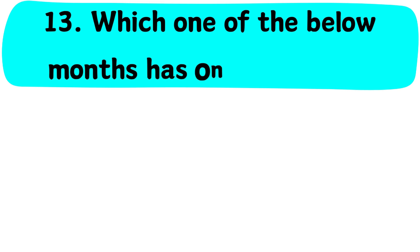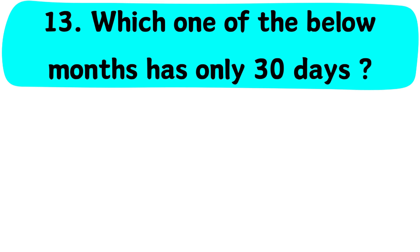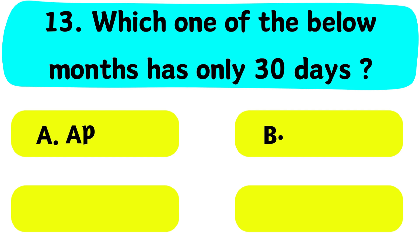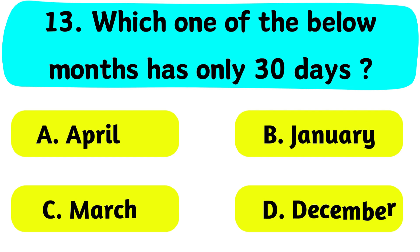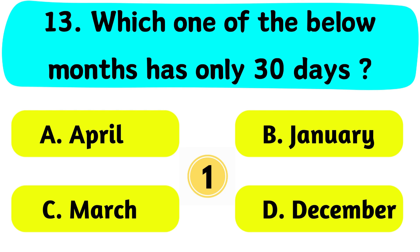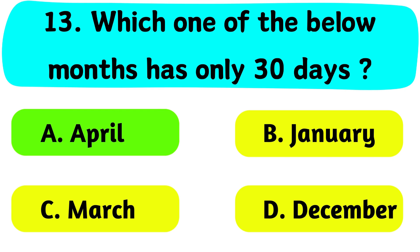Question No. 13. Which one of the below months has only 30 days? A. April, B. January, C. March, D. December. The correct answer is Option A. April.